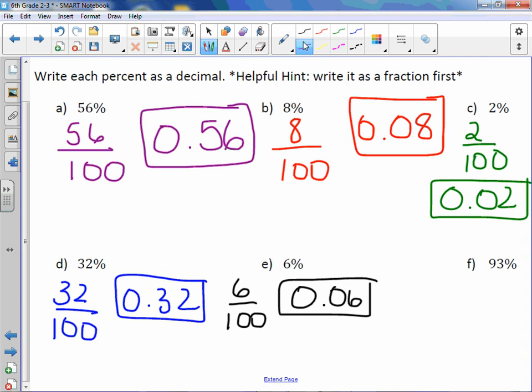And letter F is 93% or 93 over 100, which is 93 hundredths. So by simply reading the percents when they're in fraction form, you can write the decimal form.